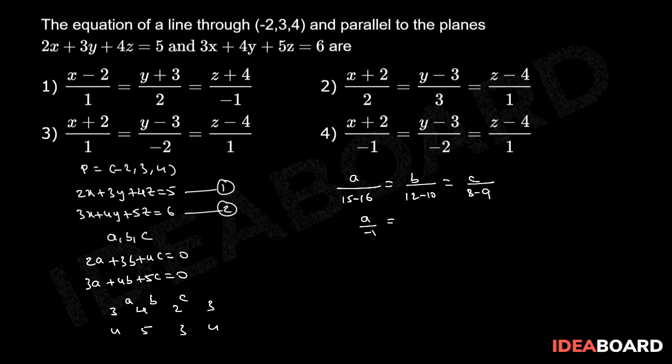That means a/(-1) = b/2 = c/(-1). Therefore, the direction ratios of the required line are (a, b, c) = (-1, 2, -1), which are proportional to (1, -2, 1).